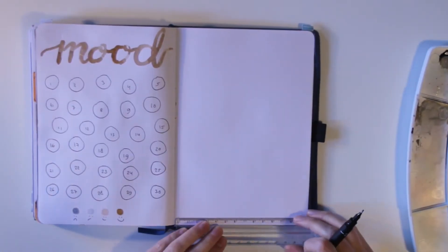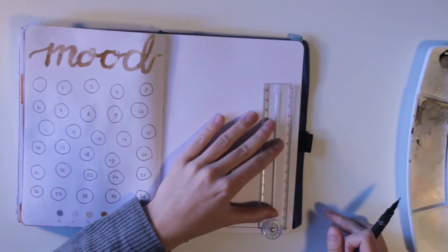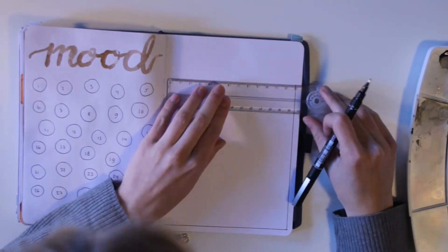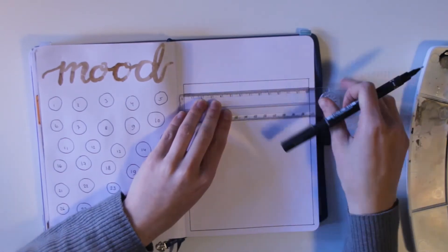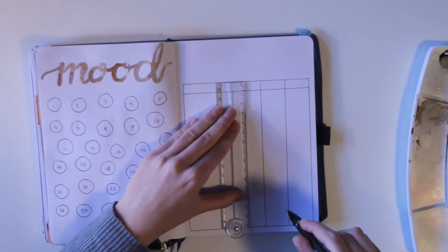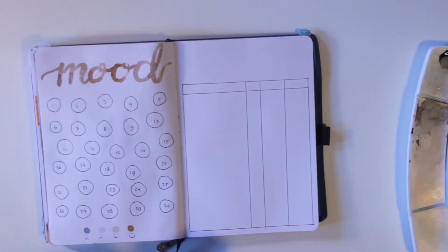And then on the right side of the page I'm going to do my expense tracker. I'm just going to make this box like I always do. It's always the same. And I like a description section, a date section and then expenses and income.